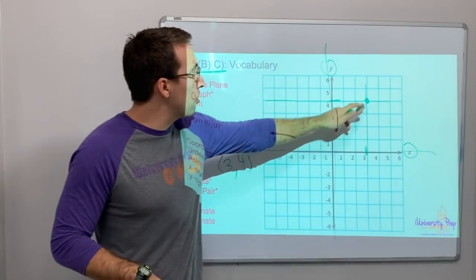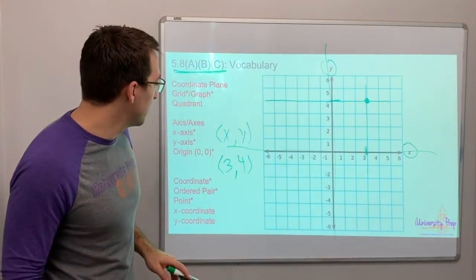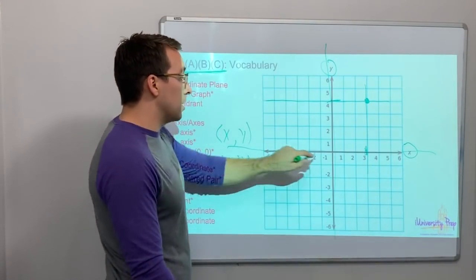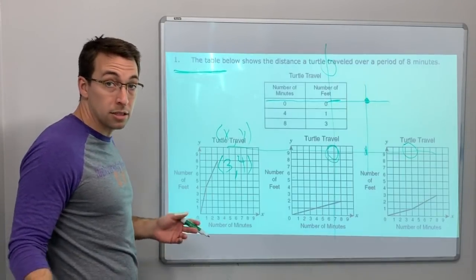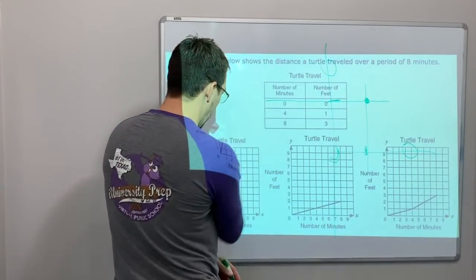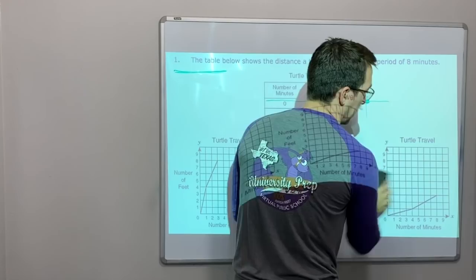And then where does it line up on the y-axis? Four. So that point is three, four, and that's how you create an ordered pair or a coordinate. The x-coordinate here is three, the y-coordinate is four. The ordered pair of the point - that is a point on the coordinate plane. Origin - the origin always is zero zero.